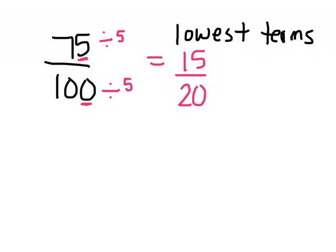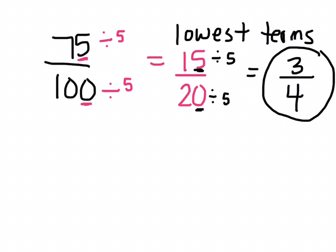Do you think that this is in lowest terms right now? We can keep reducing this. This ends in a 5, and this ends in a 0 still. So that means they can be divided by what again? 5. By 5. What's punched into your calculator? It's 15 divided by 5, and 20 divided by 5. 3 over 4. Can we reduce that even more? Or is that where we have to stop?